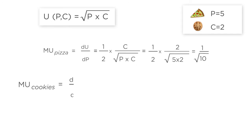The derivative of u with respect to c is 1 half times p divided by the square root of p times c. When p equals 5 and c equals 2, the marginal utility of cookies is 2.5 over the square root of 10.